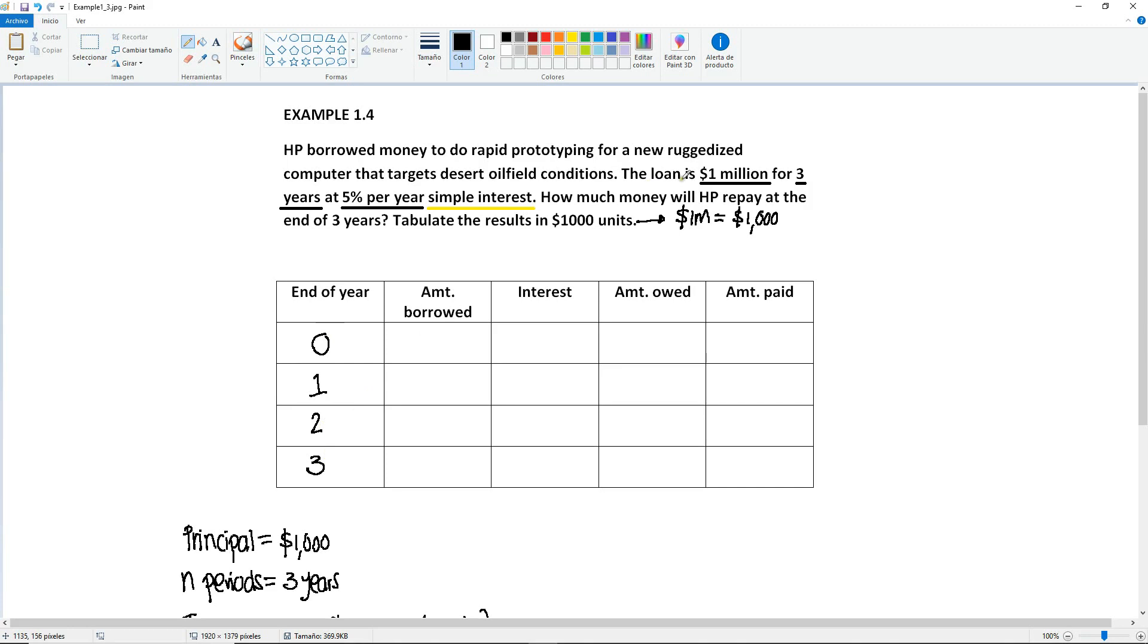First of all, it's telling you that HP borrowed money. So HP borrowed money at time zero. So at time zero, that's when the borrowing happened. Now in year zero, when you borrow the money, you're not accruing any interest until the year has passed. So no interest was accumulated in year zero.